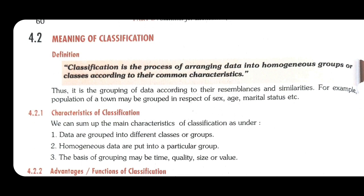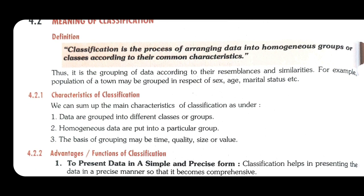Meaning of classification: Classification is the process of arranging data into homogeneous groups or classes according to their common characteristics. یعنی ایک جیسے items کو ایک group میں رکھتے ہیں — boys الگ، girls الگ؛ 9th class الگ، 10th class الگ؛ science، commerce، arts الگ الگ۔ Thus it is the grouping of data according to their resemblances and similarities.